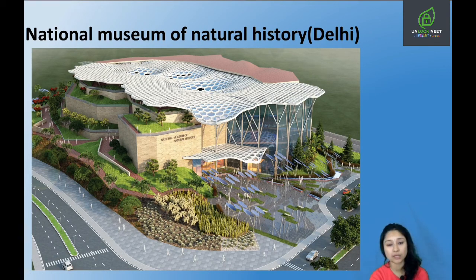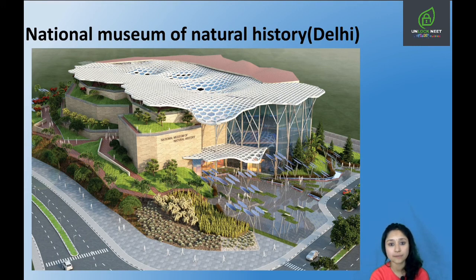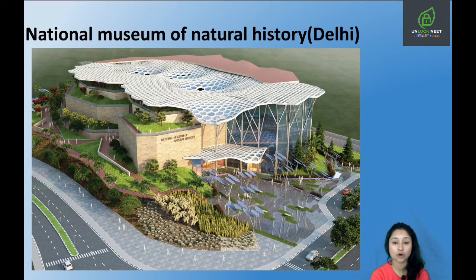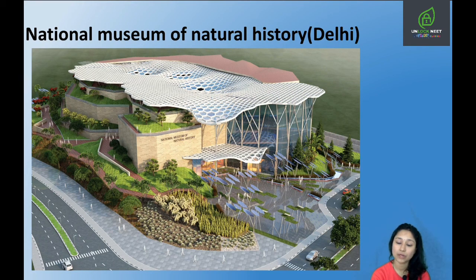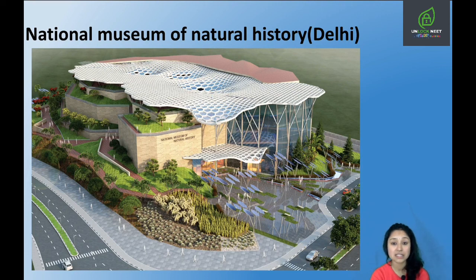So in today's lecture we discussed what taxonomic aids are and the various types: manuals, flora, catalogues — and the differences between them. We also discussed botanical gardens, zoological parks, and museum for storing preserved plants and animals. Botanical gardens are living herbariums, zoological parks keep animals under human care, and in museums preservation can be done in various ways — stuffing, insect boxes, preservative solutions, and skeleton form. In our next lecture we'll discuss more about taxonomic aids, so stay tuned!